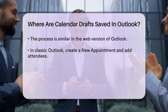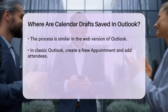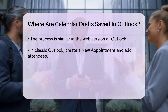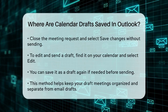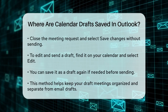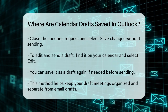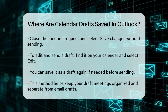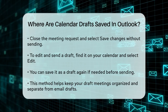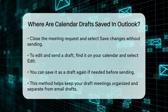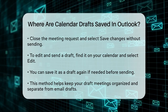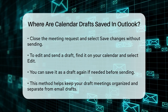In all versions, when you're ready to edit and send the draft, you simply locate it on your calendar, select Edit, make your changes, and then select Send. You can also save it as a draft again if you're not ready to send it yet.